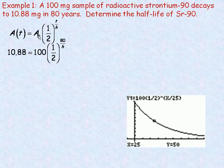Now, the 100 is the original amount, so that's the A₀ amount. And in 80 years, so 80 goes in place of time here, it decays to 10.88 milligrams. So that's the amount after 80 years.